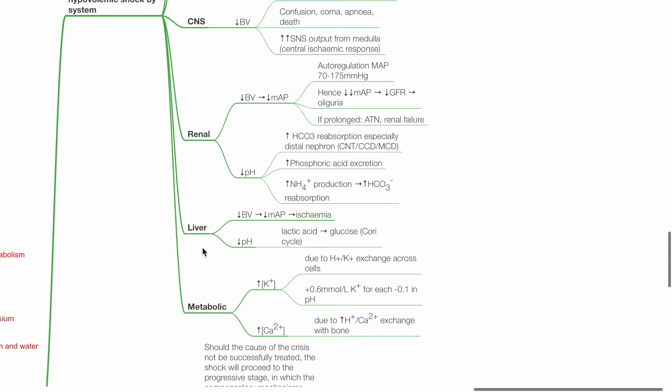In the liver, reduced blood volume results in reduced MAP and hepatic ischemia. Lactic acid is converted to glucose via the Cori cycle. Metabolic changes include hyperkalemia due to hydrogen and potassium ion exchange across cells. Hypercalcemia occurs due to hydrogen and calcium ion exchange with bone.